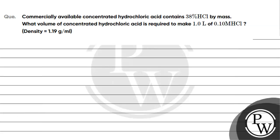Hello guys, let's read this question. The question says commercially available concentrated hydrochloric acid contains 38% HCl by mass. What volume of concentrated hydrochloric acid is required to make 1 liter of 0.10 molar HCl?